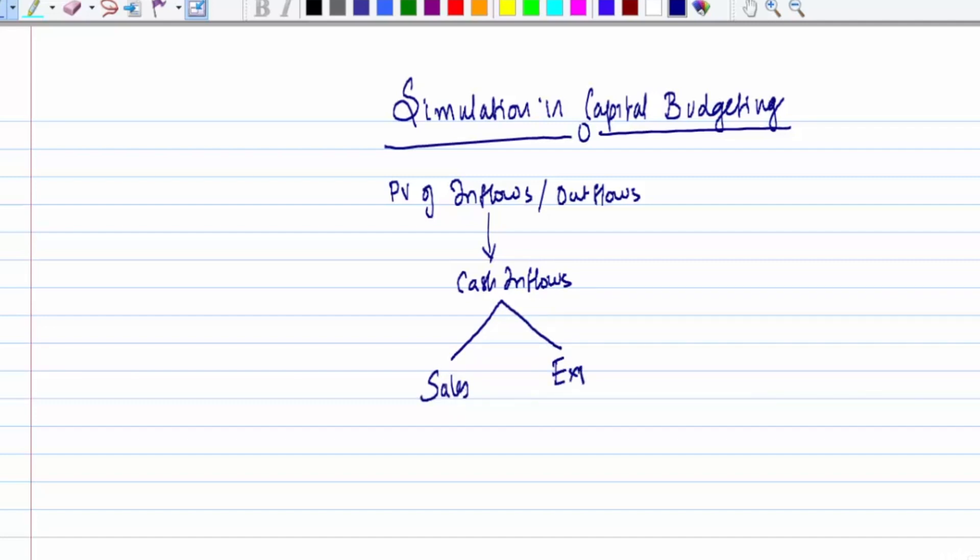We have to understand that sales can be influenced by sales volume and selling price. Similarly, expenses can be influenced by variable cost and also by fixed cost.